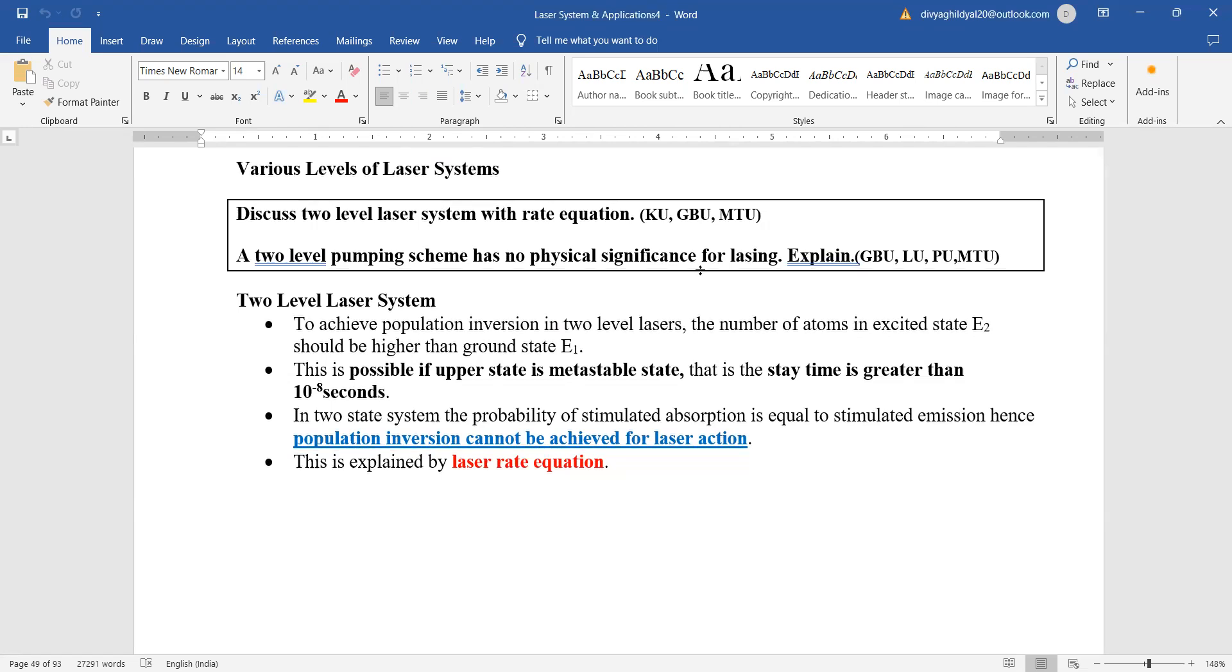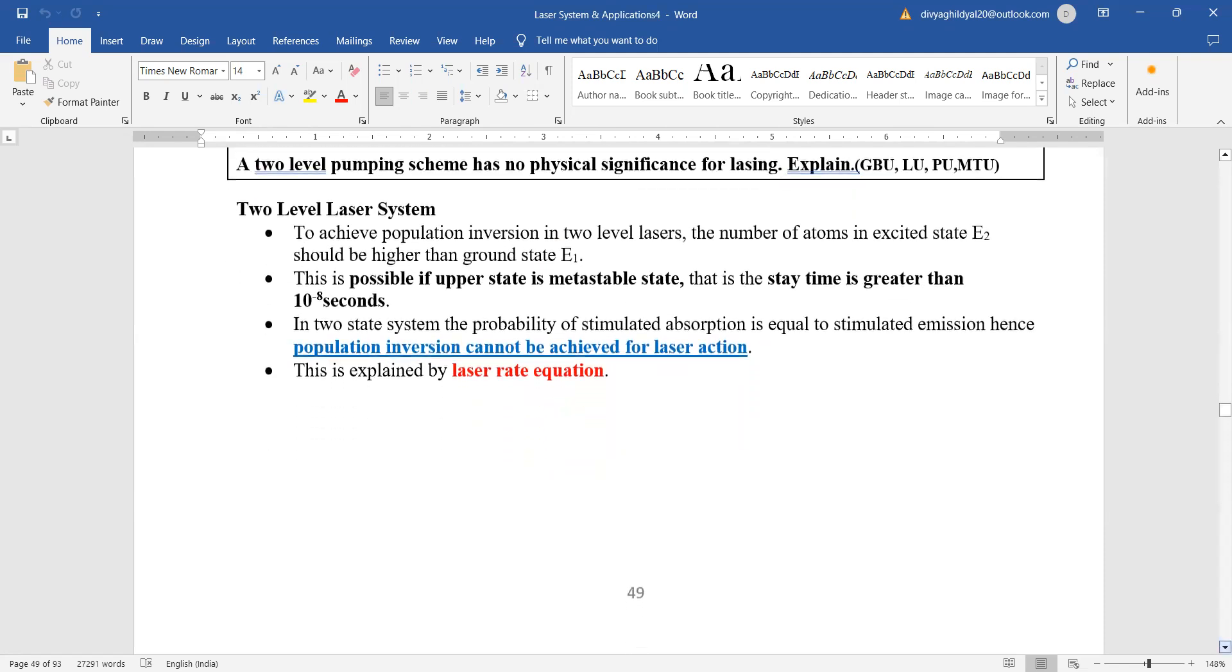Rate equations are asked for two-level and three-level laser systems. So let us begin. What do you mean by two-level? Two-level obviously means there are just two levels between which laser action has to appear, which is not possible.